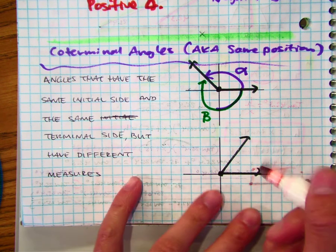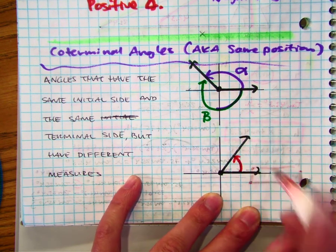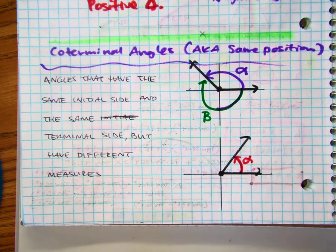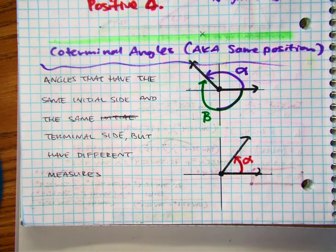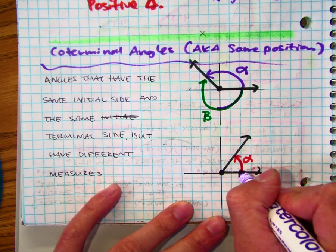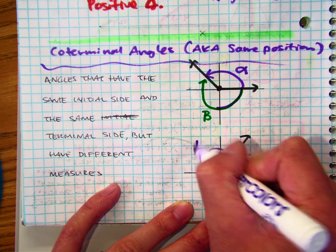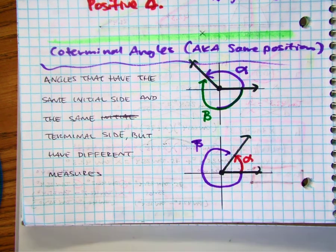Well, if I do a positive angle, call that alpha, or I can go the other direction, in this case clockwise, which forms a negative angle. Notice how they end up in the same position.